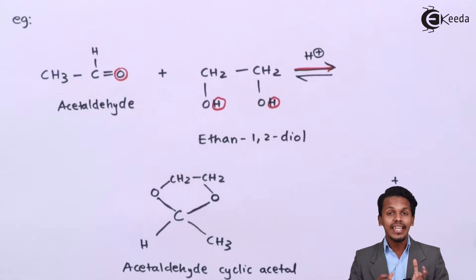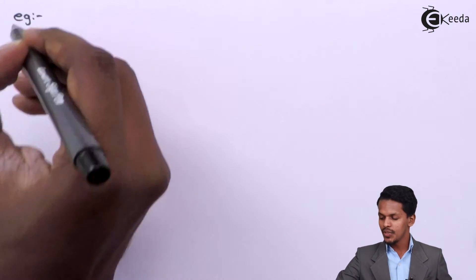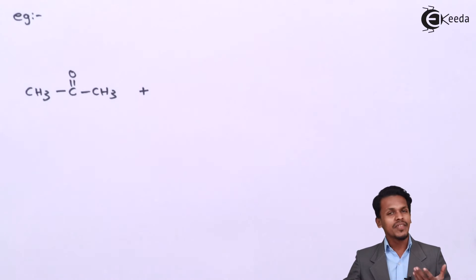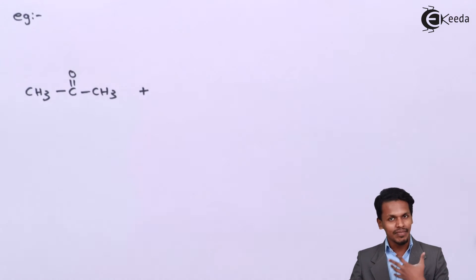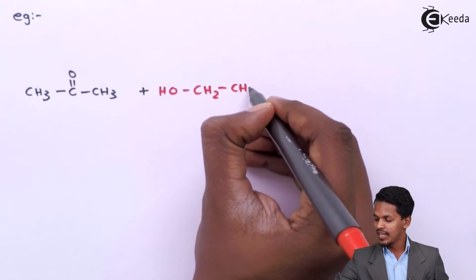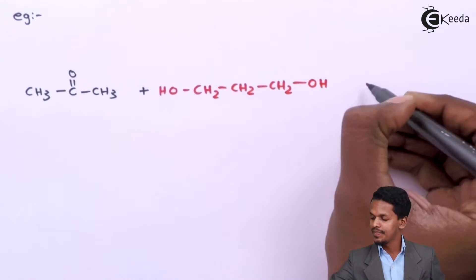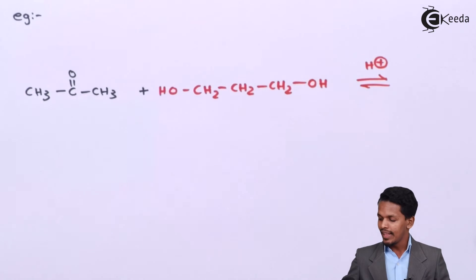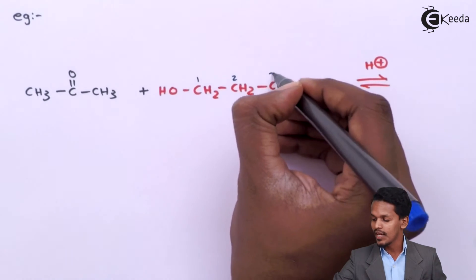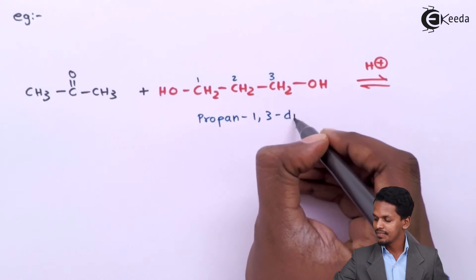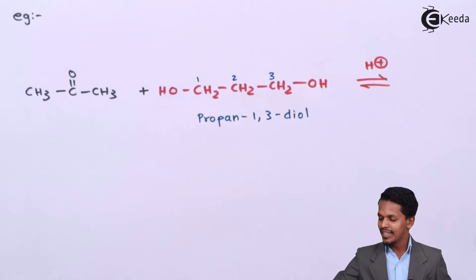Now let us look at the reaction of a ketone with a diol. We consider acetone, CH3-C(=O)-CH3. In this case, instead of a 1,2-diol, we use a 1,3-diol, represented as HO-CH2-CH2-CH2-OH, in acidic medium (H+). This compound is propylene glycol, or propane-1,3-diol according to IUPAC nomenclature.